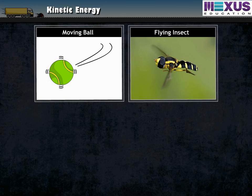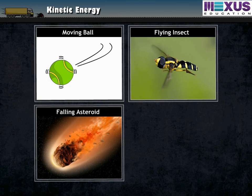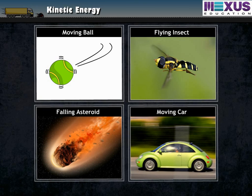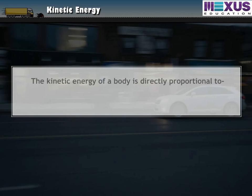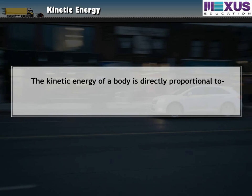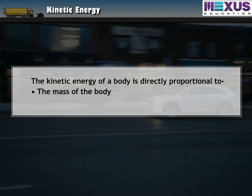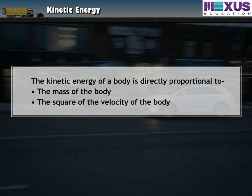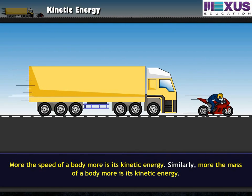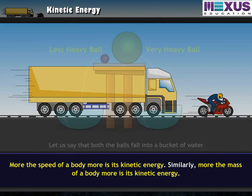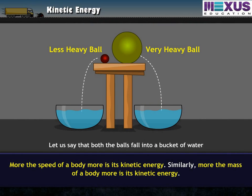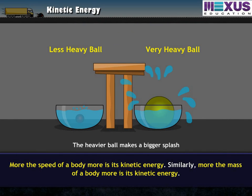A moving ball, a flying insect, a falling asteroid, and a moving car possess kinetic energy due to their motion. The kinetic energy of a body is directly proportional to the mass of the body and the square of the velocity of the body. More the speed of a body, more is its kinetic energy. Similarly, more the mass of a body, more is its kinetic energy.